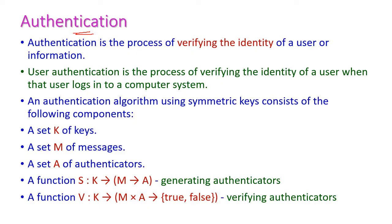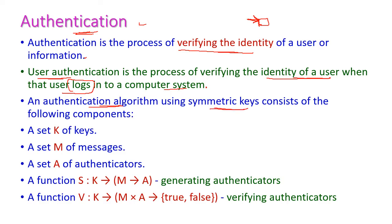Next, let us see authentication. Authentication is a process of verifying the identity of a user or information. User authentication is the process of verifying the identity of a user when that user logs into a computer system — we need to verify whether the user is an authorized user or not. The authentication algorithm using symmetric keys consists of the following components: a set of keys, a set of messages, and a set of authenticators. It also has two functions: function S for generating authenticators, and function V for verifying authenticators — whether the user is authorized or not.